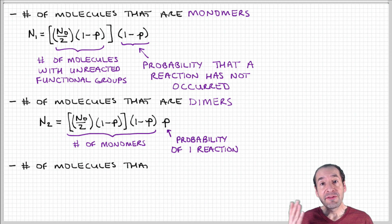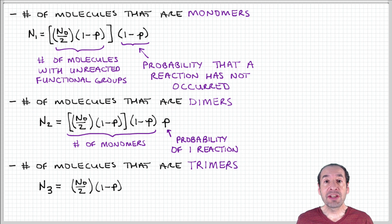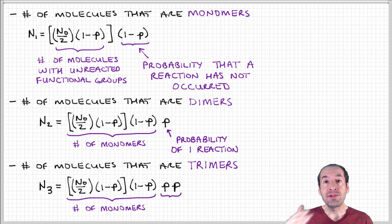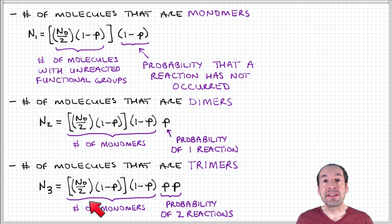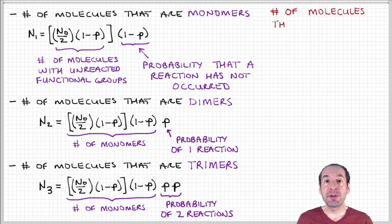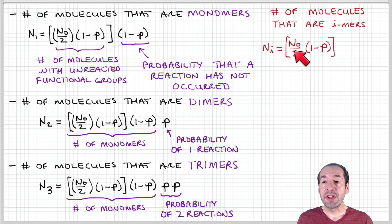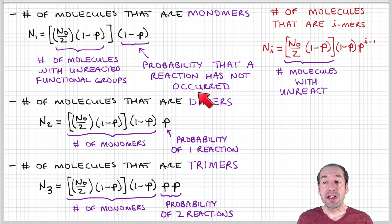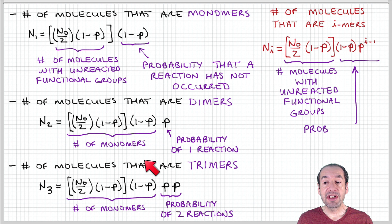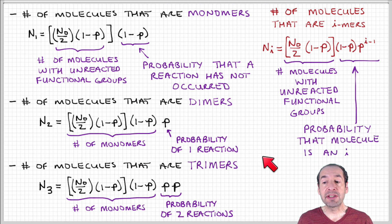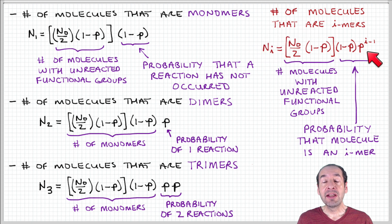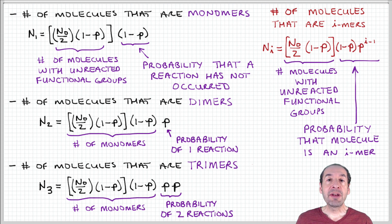We can continue this line of thinking and ask how many molecules are trimers. If we think about the pathway to achieve a trimer, it must ultimately result from a monomer that has experienced two reactions to reach this trimer state. Continuing up to an arbitrary length, the pattern that emerges is: the number of i-mers is equal to the number of molecules with unreacted functional groups times the probability that those molecules have experienced the number of reactions needed to produce an i-mer. This expression allows us to count all molecules of different chain lengths across the entire polymer sample.